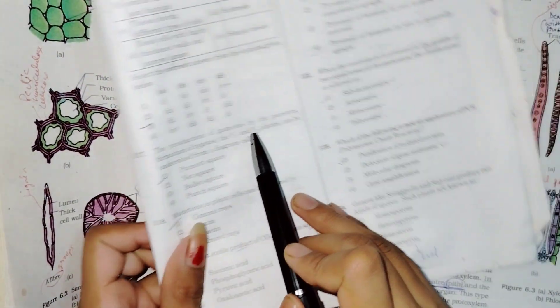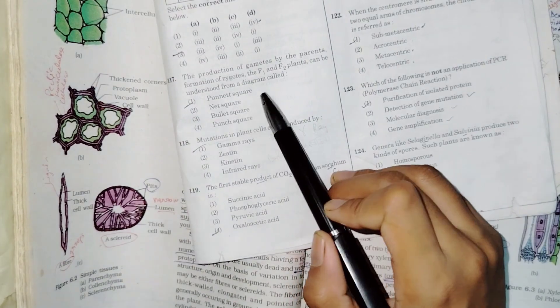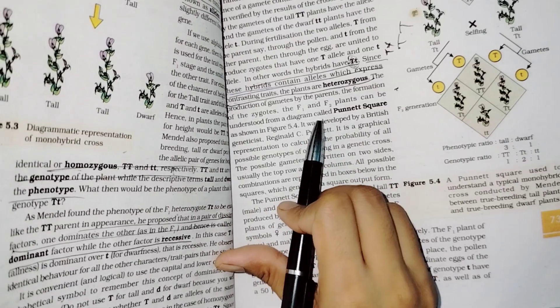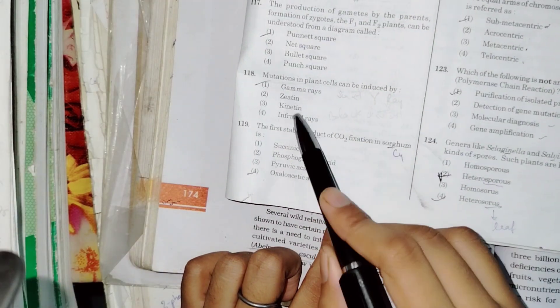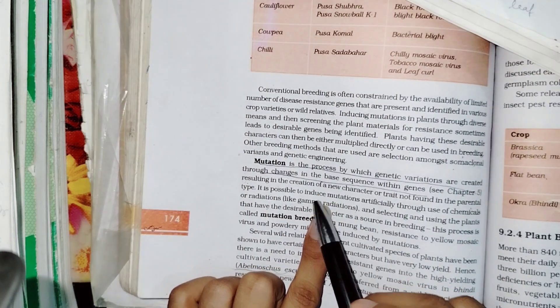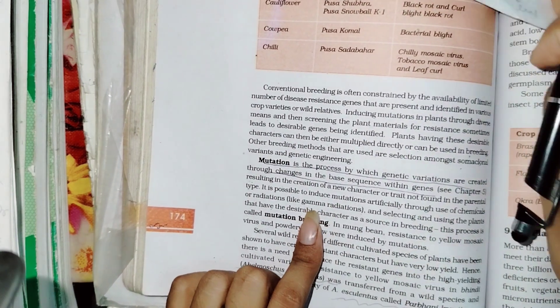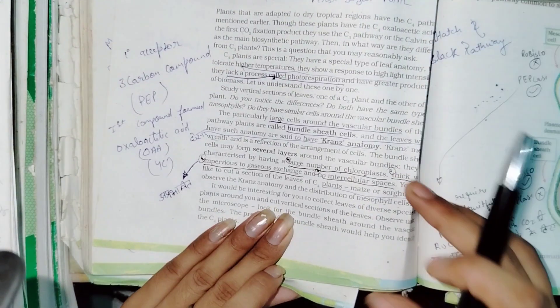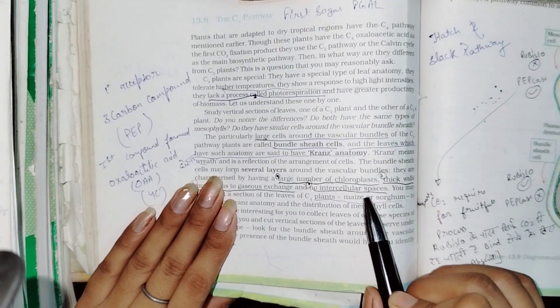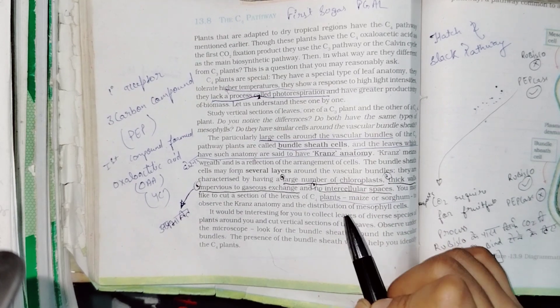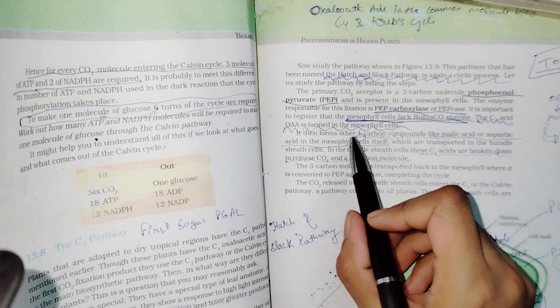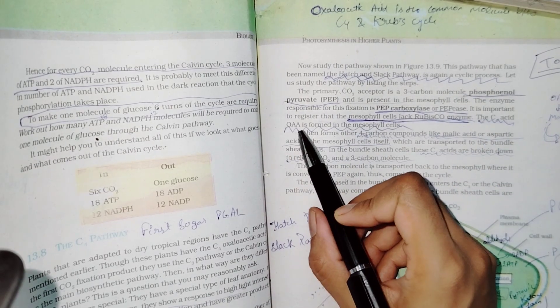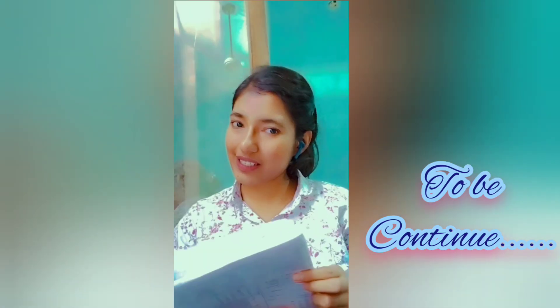The production of gametes by the parents to form a zygote can be understood from a diagram called - as it is shown. Mutation by gamma radiation - mutation in plants, gamma radiation. In C4 pathway, the first stable product of CO2 fixation is in sorghum. Thank you.